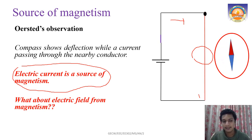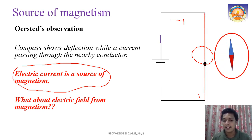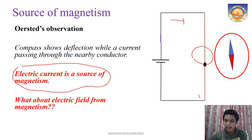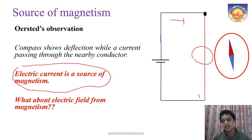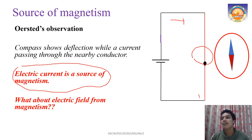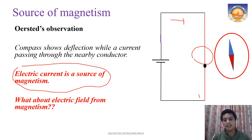After Oersted's discovery, everybody was looking for the reverse process — whether it is possible to produce electricity from magnetism. Both are independent things: we can have magnetism, and we can have an electric field due to charge. The question of whether we can produce electric current from magnetism was answered by Michael Faraday, eleven years after 1831.